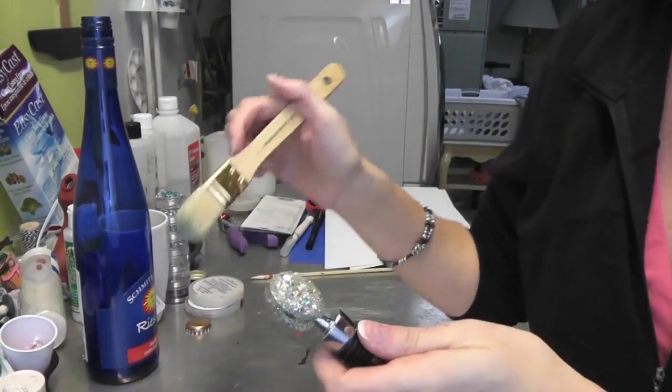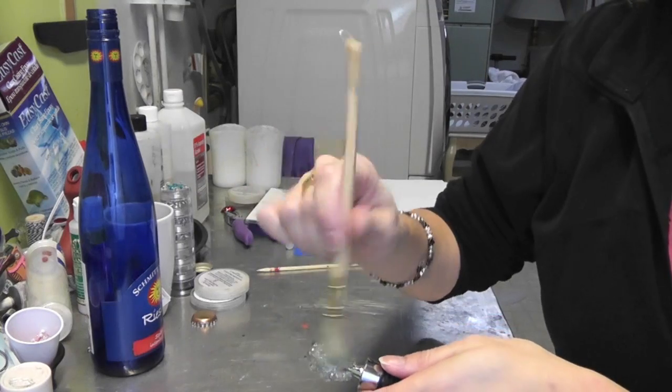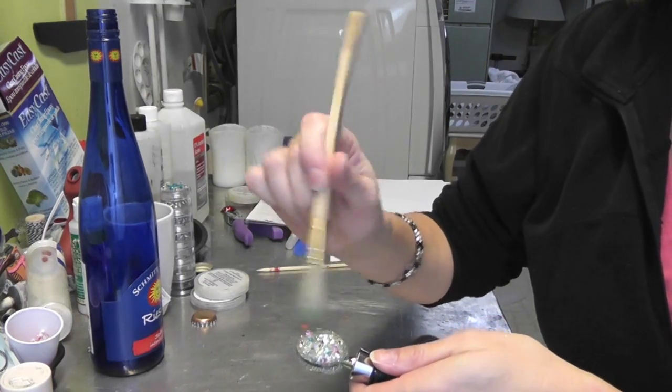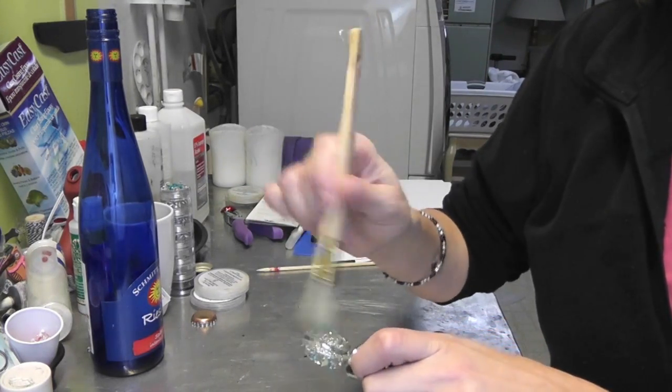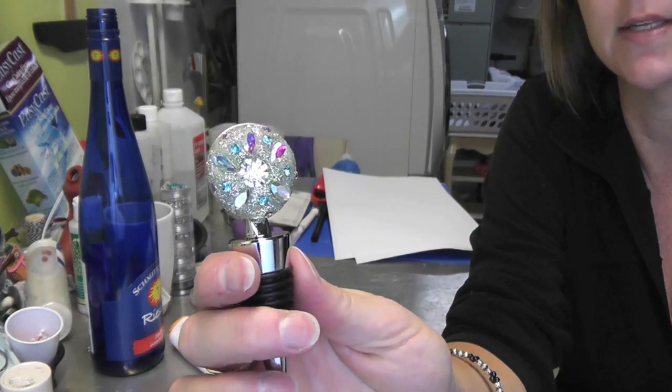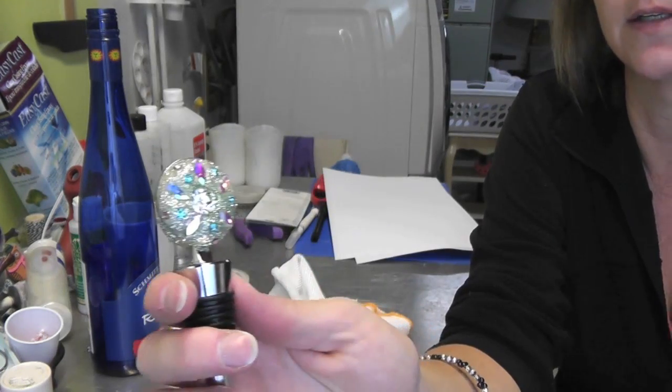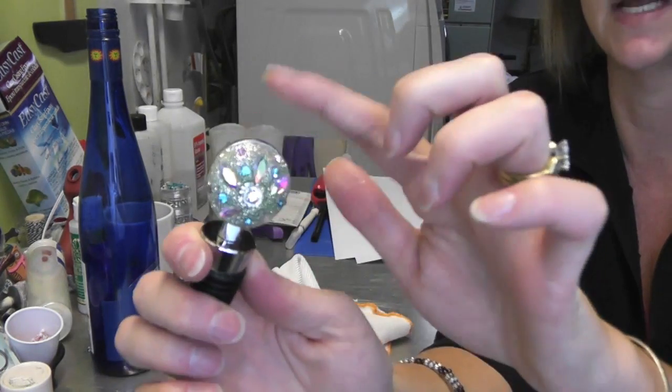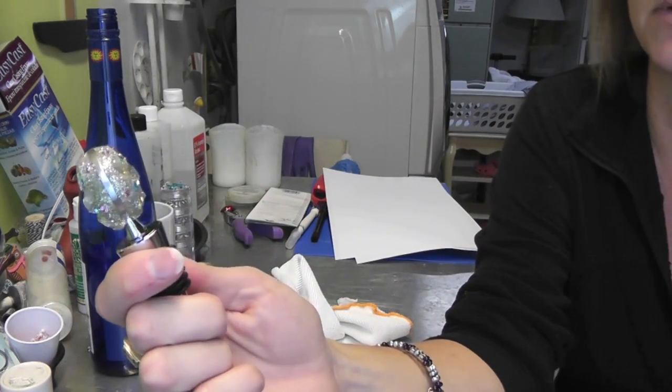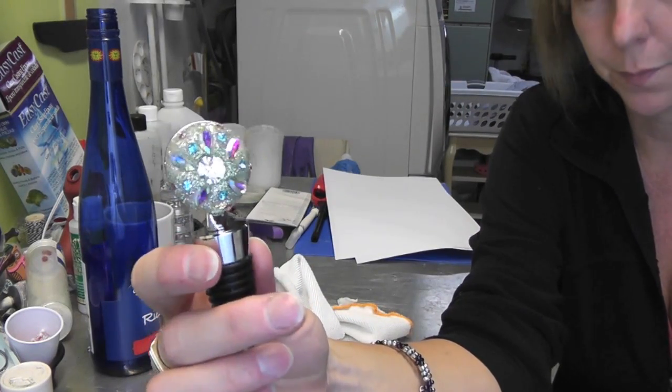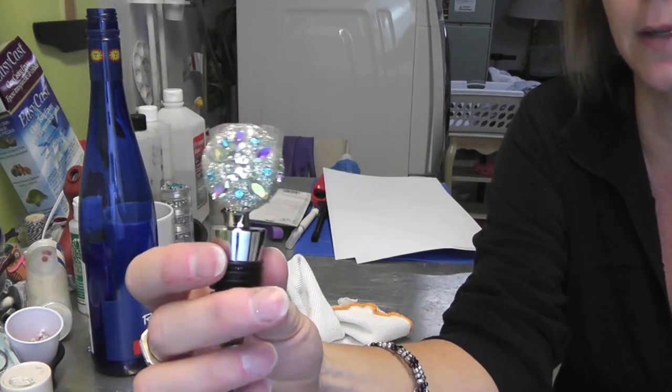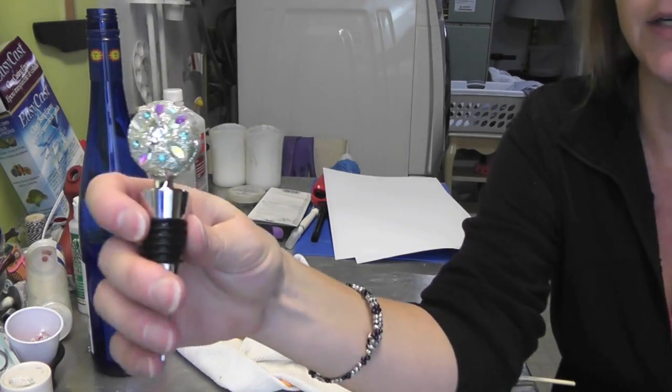The wine bottle stopper has set. Now I'm just going to brush off any of the excess glitter on here. So here it is all sparkly and glittery. The glitter actually held on really nicely and it gives it a little more shine even. Perfect to put in a wine bottle and have on display at your next party.